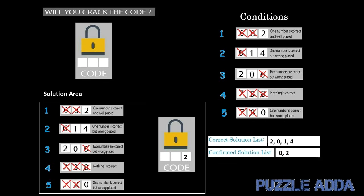Now taking conditions 3 and 5 into consideration. Condition 5 says one number is correct but wrongly placed. In the 5th condition the numbers 7 and 8 are not in our solution set, so the only digit left is 0. Taking condition 3 also into consideration, which says two numbers are correct but wrongly placed — we have already placed digit 2 at position 3. So according to conditions 3 and 5, digit 0 should be at the first position of our code.